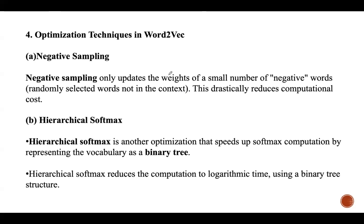Optimization techniques used in Word2Vec are negative sampling and hierarchical softmax. Negative sampling speeds up training by not computing the full softmax for all vocabulary words — it only updates weights for a small number of randomly selected negative words not present in the context, reducing computational cost. Hierarchical softmax reduces computation by using a binary tree structure to represent the vocabulary, computing probabilities in logarithmic time.